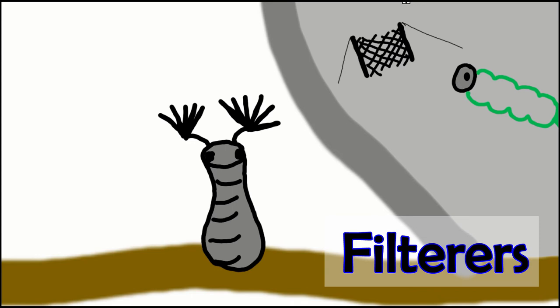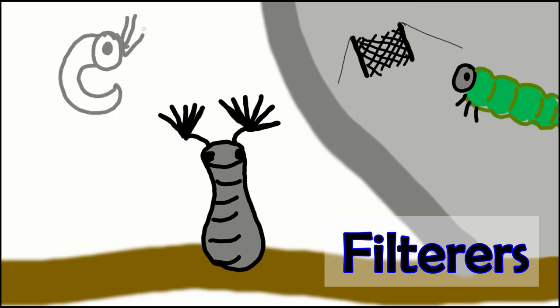The net spinning caddisfly doesn't expend its energy actively filtering particles. It finds a nice place on a rock that has a current and places a silk net to filter particles out of the water. They will then either graze off of their net or eat it completely and build a new one.